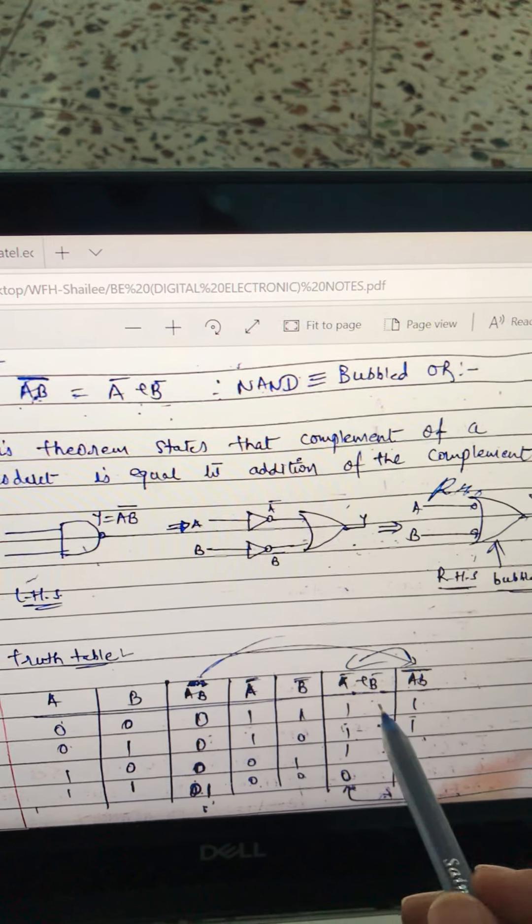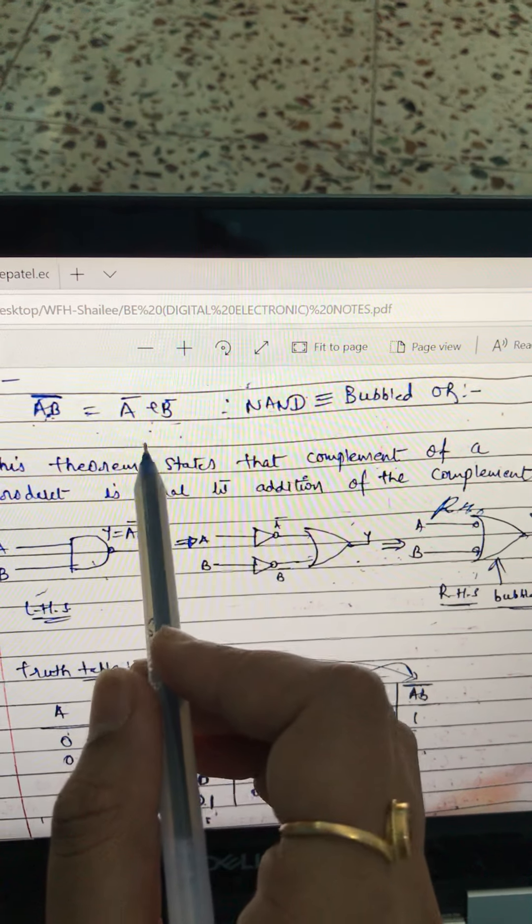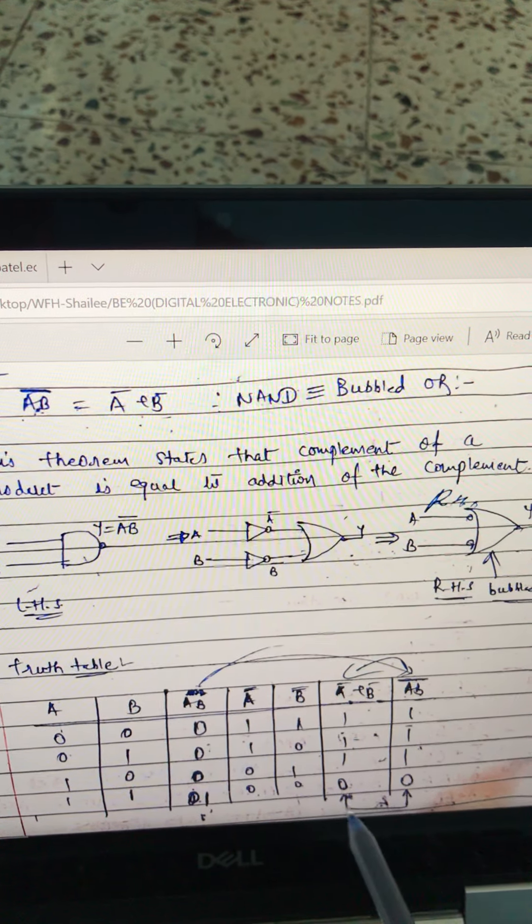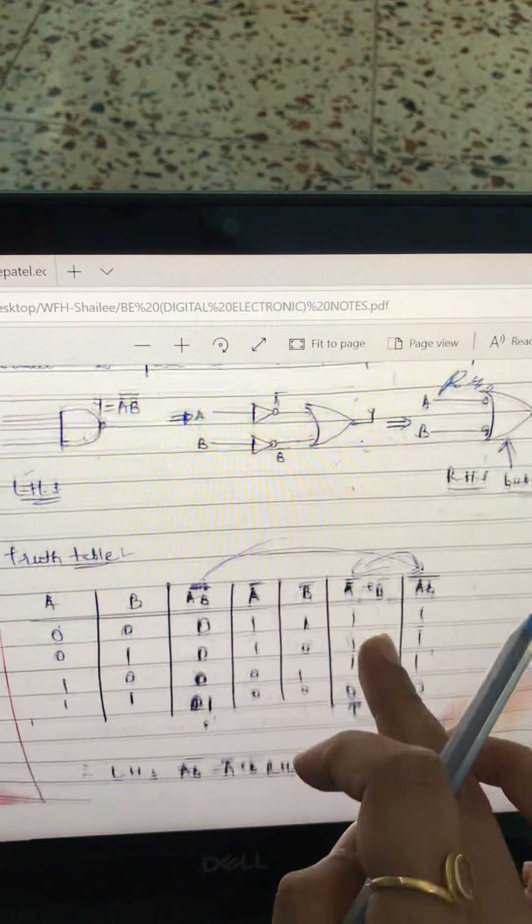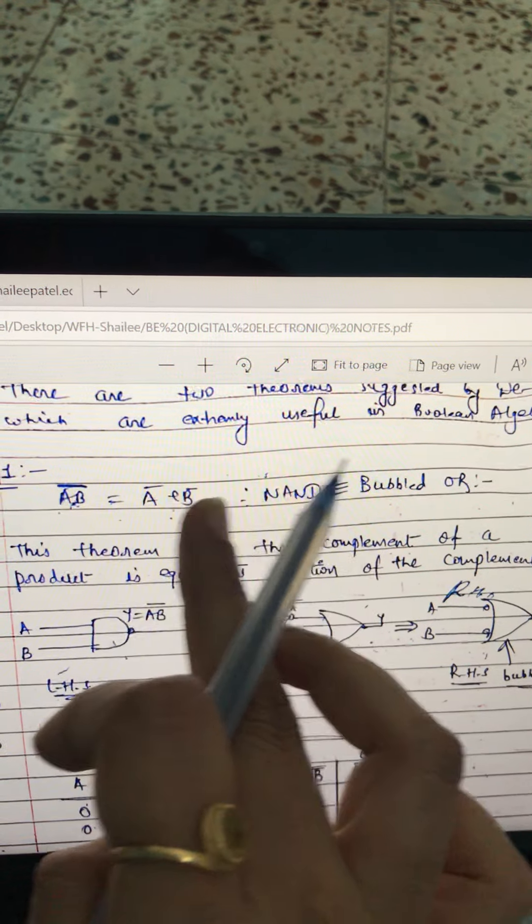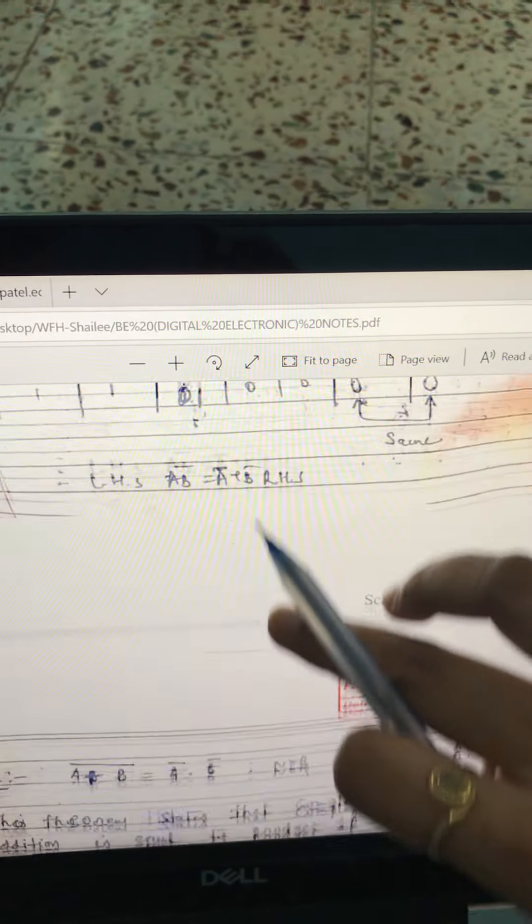Triple one zero. Right. So this is your right hand side. This is your left hand side. See these two columns are equal. That means this is same. It is proved that NAND gate is equals to individual bars addition.